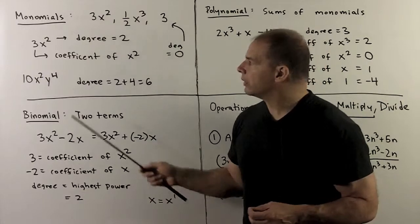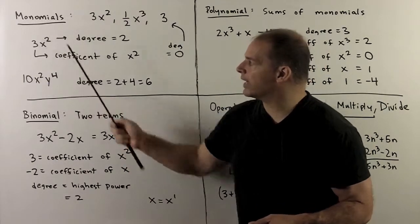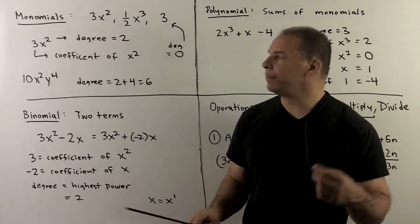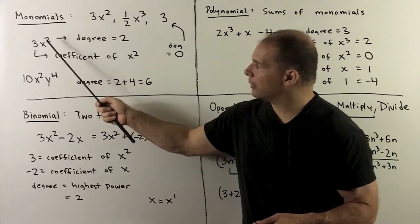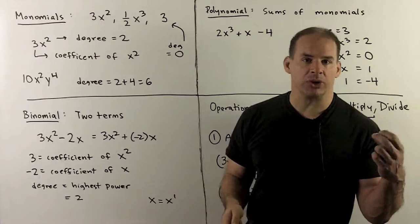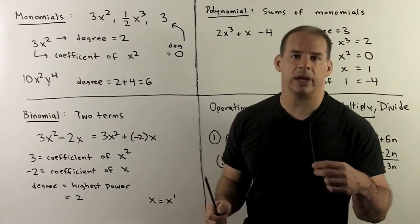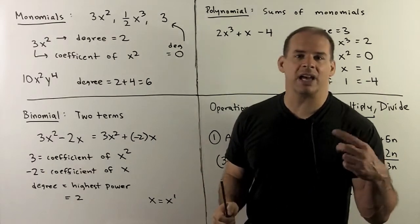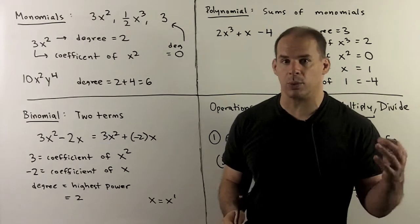The parts that go into a monomial: the number out in front. Here I have 3x squared, so the 3 is what we'll call the coefficient of x squared. The degree of our monomial is going to be the exponent on our variable, so here degree is equal to 2. As a special case, if I have just a number, we say the degree is equal to 0. You can think of 3 as being 3 times x to the 0, since a non-zero thing raised to the 0 is always equal to 1.